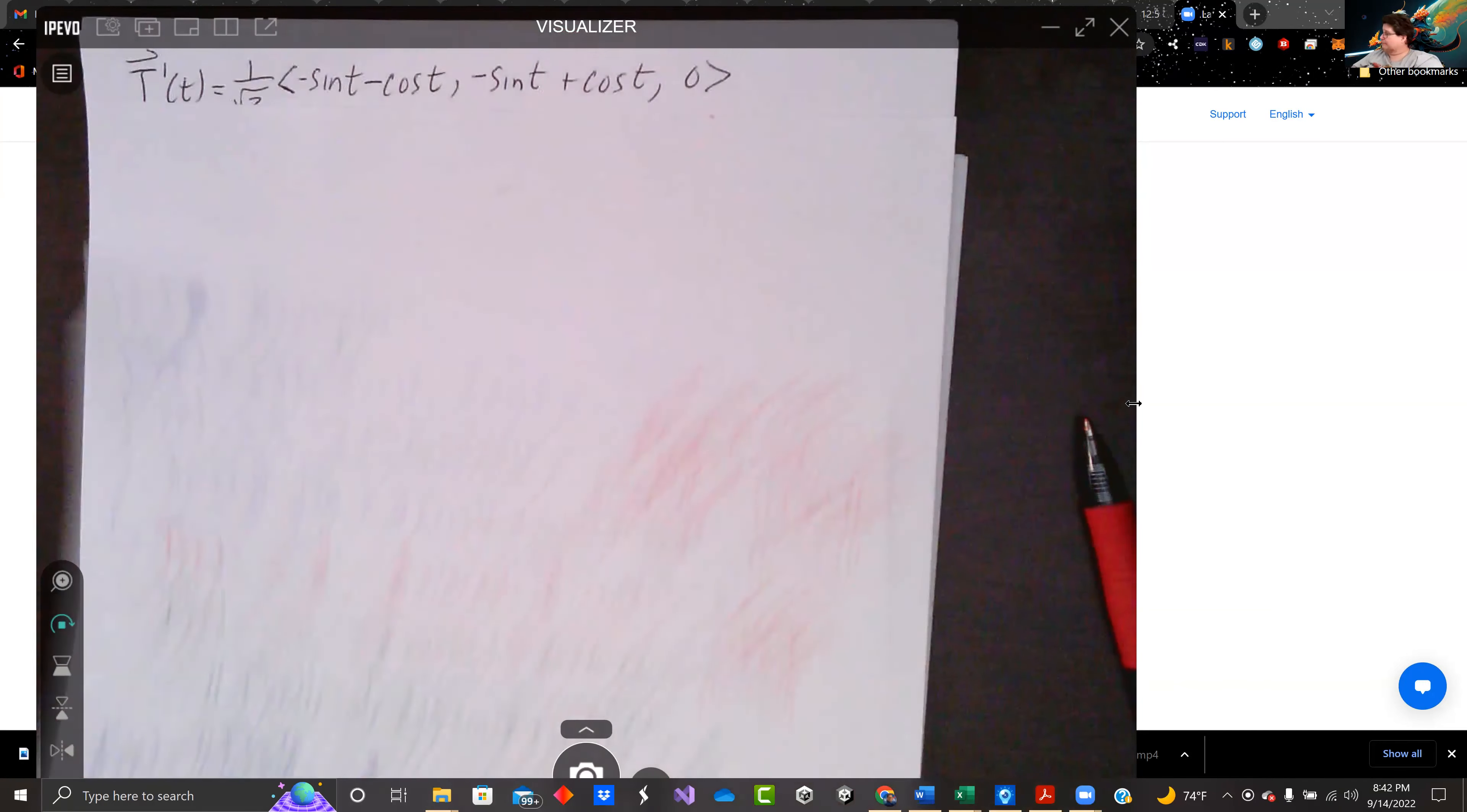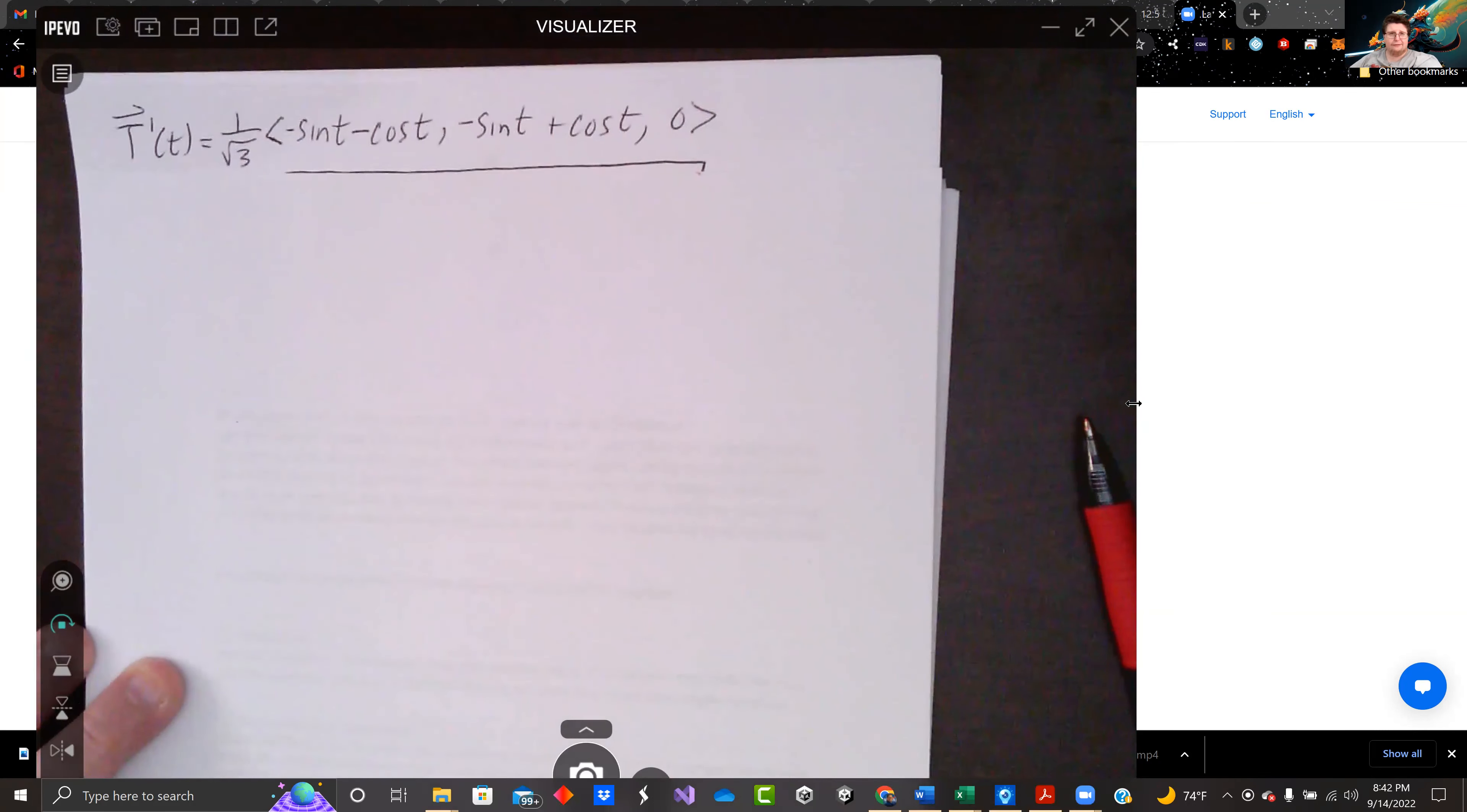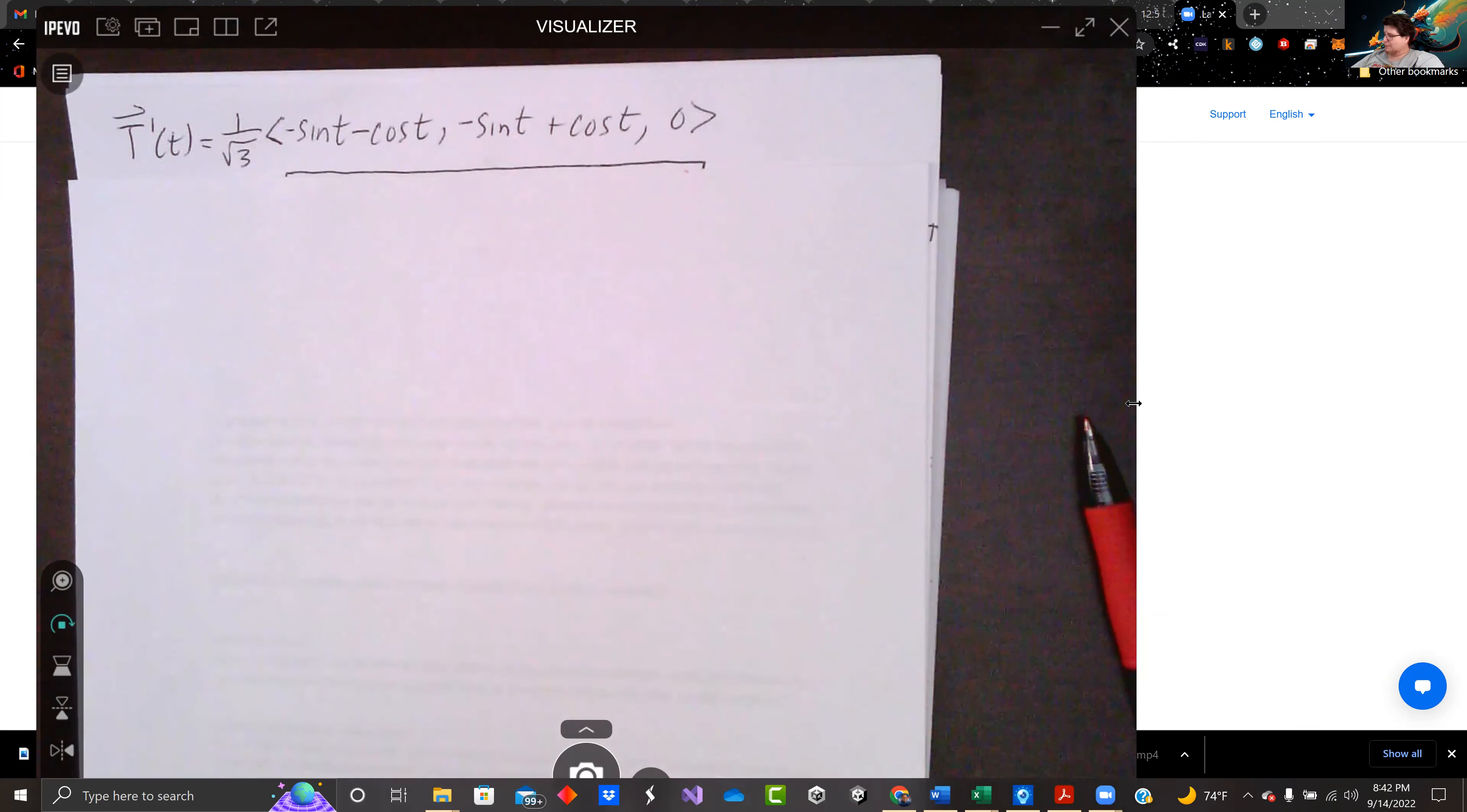Let's finish this problem out. We take the derivative of the tangent vector, and we have it right here. One over root three. That didn't change. We've got negative sine of t minus cosine of t. We've got negative sine of t plus cosine of t. And we've got zero. The derivative of one is zero. And we need the magnitude of this.